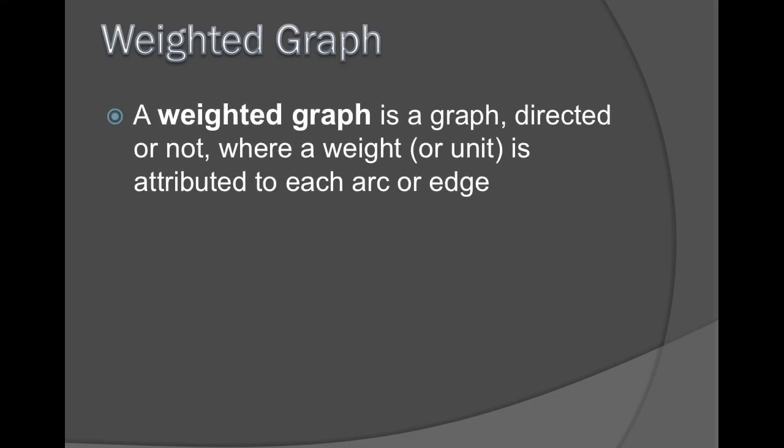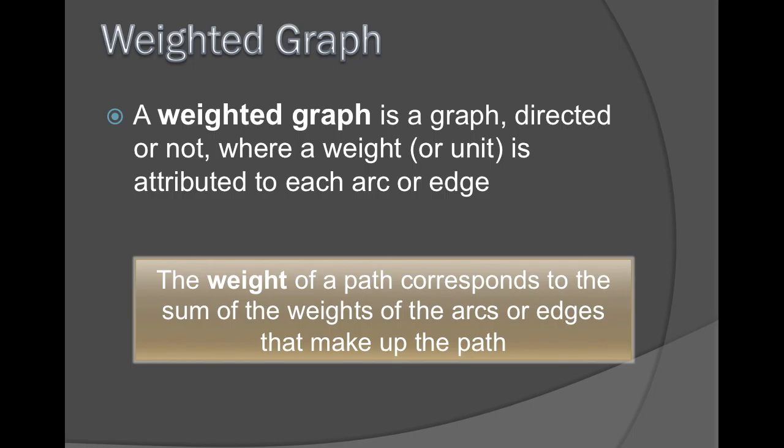Let's talk about weighted graphs now. A weighted graph is a graph, directed or not, where a weight or unit is attributed to each arc or edge. The weight of a path corresponds to the sum of the weights of the arcs or edges that make up the path.